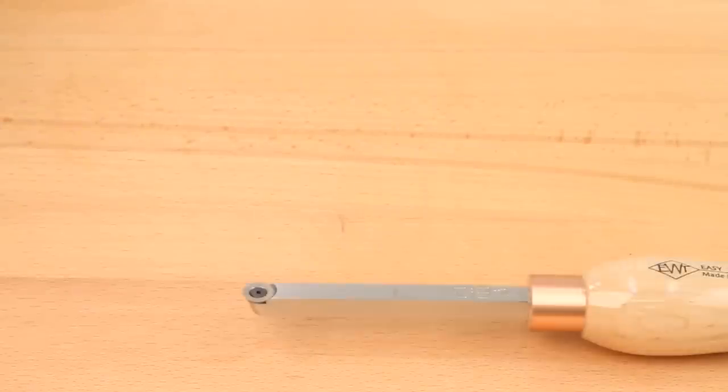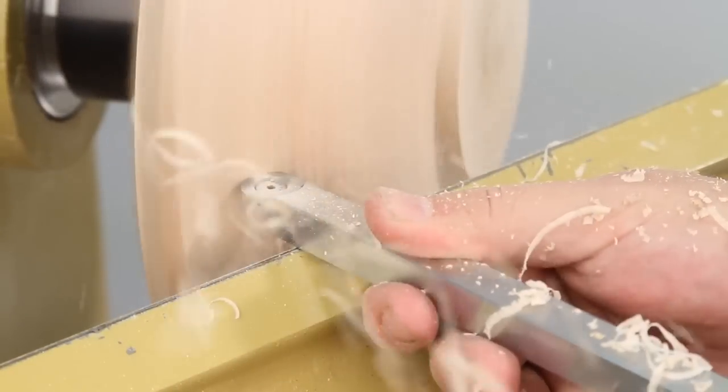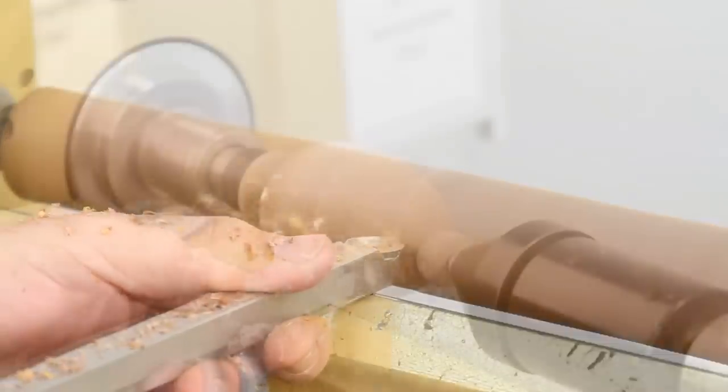The Easy Finisher is available in three sizes to suit any size of turning, making it ideal for turning any bowl, spindle, or project.